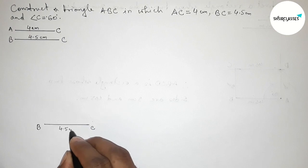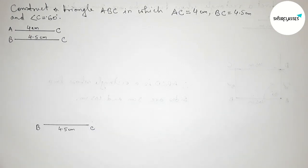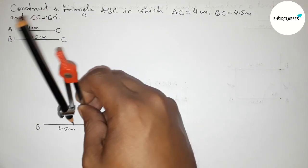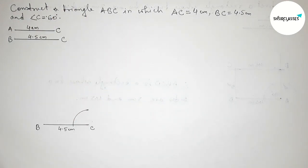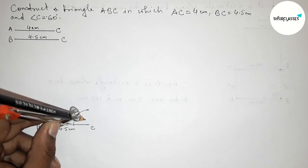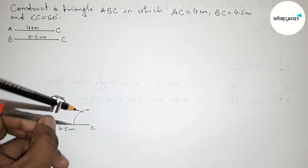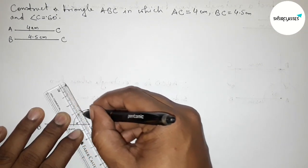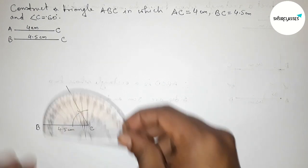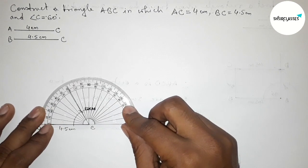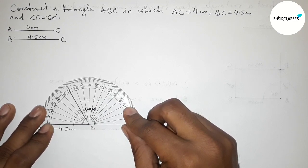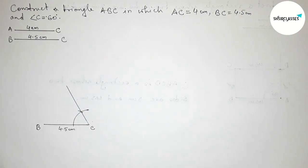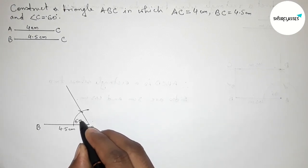Next, drawing a 60 degree angle at point C. Putting the compass on point C, taking any length and drawing an arc. Again putting the compass on the arc intersection and taking the same length, cutting another arc. Joining this line to get a 60 degree angle. Checking with the protractor — this is a 60 degree angle.